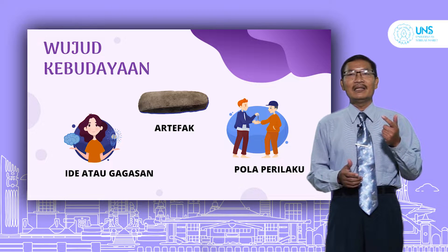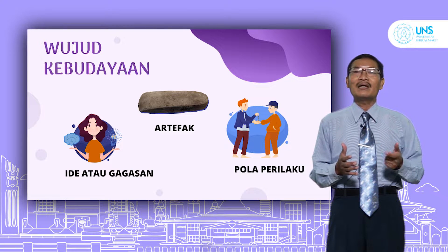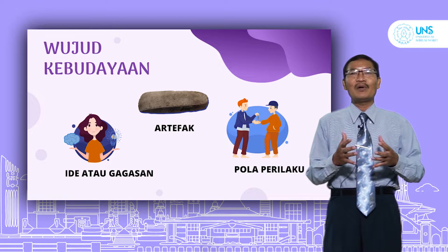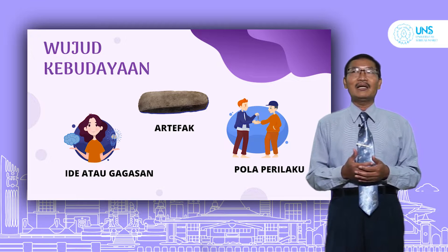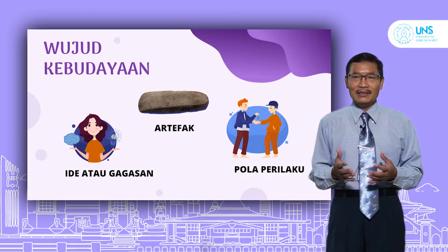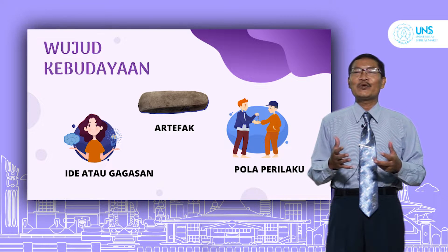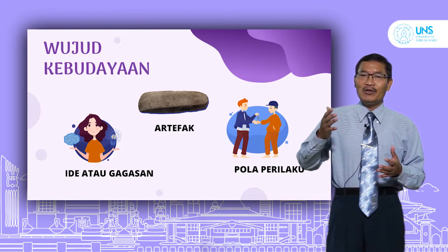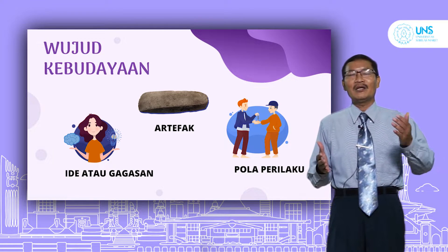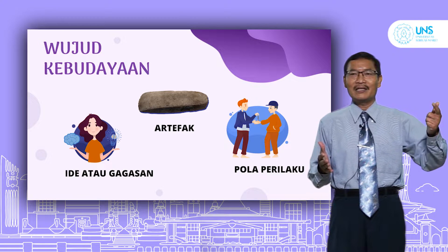Yang pertama adalah ideologi atau gagasan, atau idea fact, fakta tentang gagasan. Yang kedua adalah social fact atau fakta sosial yang merupakan pola perilakunya. Dan yang ketiga adalah artefakt, yaitu fakta adanya atau bentuk fisiknya. Antara ide, sosial, dan bentuk adalah merupakan satu kesatuan yang tidak dipisahkan.